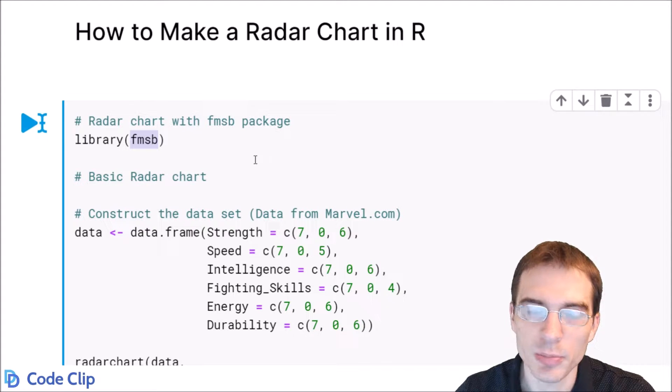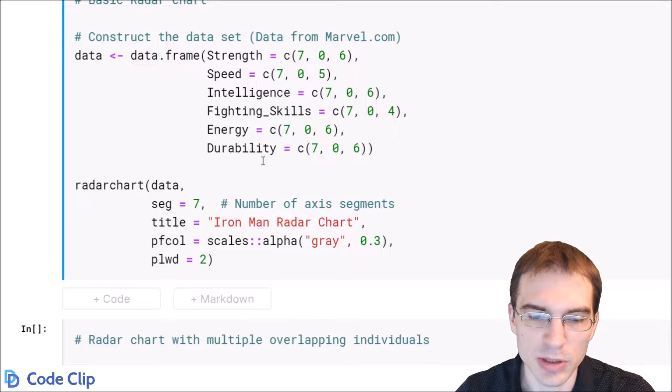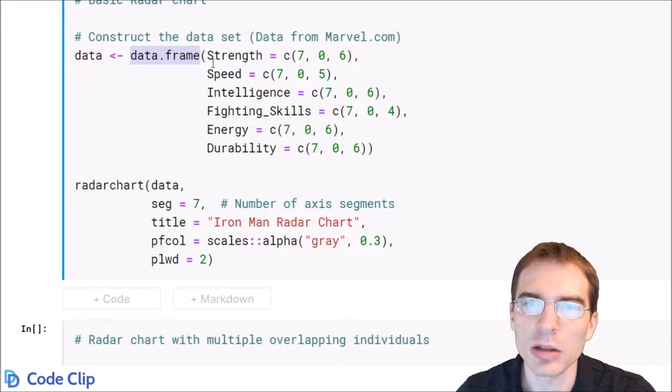So we're just going to start with a basic radar chart, and I'll show you how you have to structure the data to make this work. You want to store your data in a data frame, and each of the columns is going to be named one of the different features that's going to be on the different points of the radar chart.